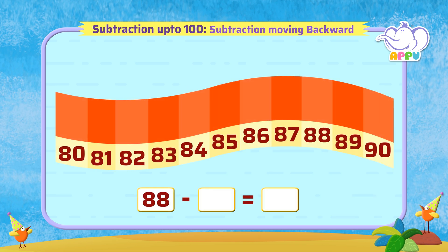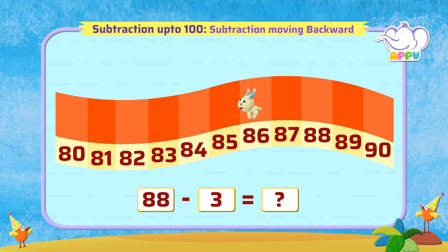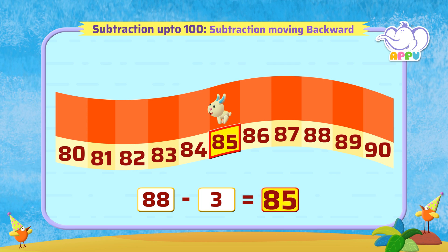88 minus 3. Count backwards by 3, which is 87, 86, 85. So the answer is 85. That's good!